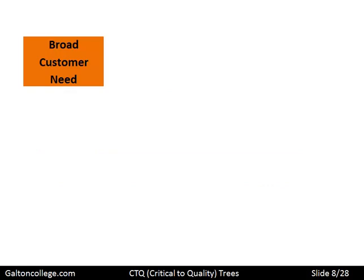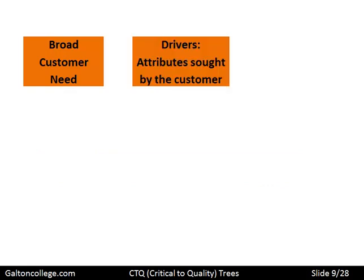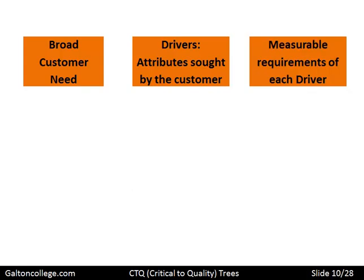We look at, for example, the broad customer needs, then we look at the drivers — the attributes sought by the customer. So what is the broad customer need overall, and then what particular attributes does the customer have in mind — what does the customer want more specifically? These are the drivers. And the measure: what are the measurable requirements of each driver? How do we measure whether the attributes sought by the customer are met or not?